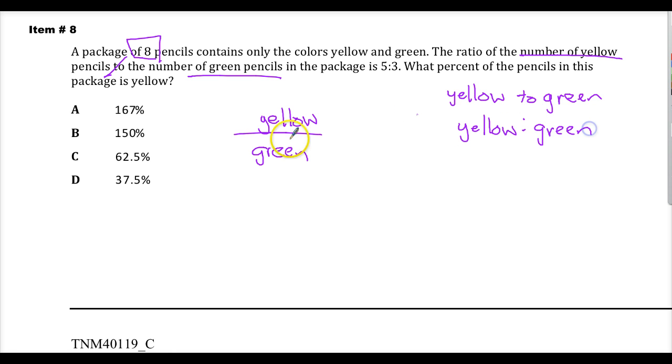And they apply a number to it. So, they say that the yellow to green is really five to three, or if you wanted to do it as a ratio or a fraction style, it's five to three. Either way you want to deal with it is how you deal with it.